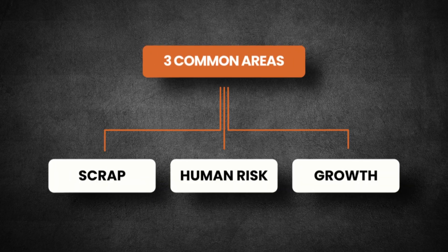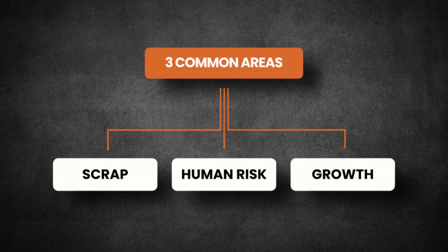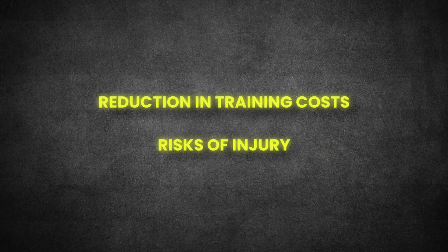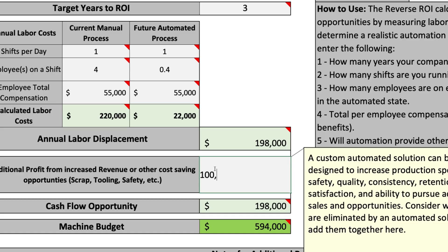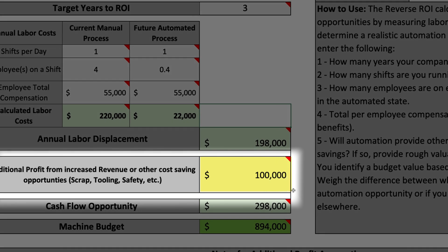Now that we have the labor savings figured out, we get to the additional profit and risk mitigation category. I will cover the three common areas that our customers identify. First is the cost associated with scrap materials. Second is human risk — common examples are reduction in training costs and risks of injury, both difficult to quantify until you've felt the pain, so evaluate them in terms of lost revenue or workers' compensation cost. My personal favorite is growth via an opportunity to increase sales and the additional value created by the displaced labor of automation. For the purposes of this example, we're going to add $100,000 to this category.